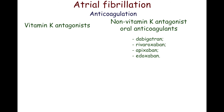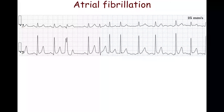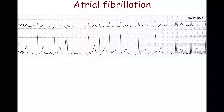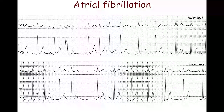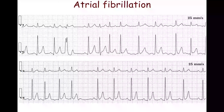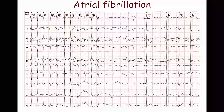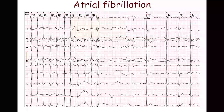There is onset of atrial fibrillation on this strip. The first, second, and fourth beats are of sinus origin. The third complex is a ventricular extrasystole. This strip shows spontaneous termination of atrial fibrillation; the first four beats are atrial fibrillation. Sometimes a prolonged pause after an atrial fibrillation episode termination may be seen — this is called a post-conversion pause.